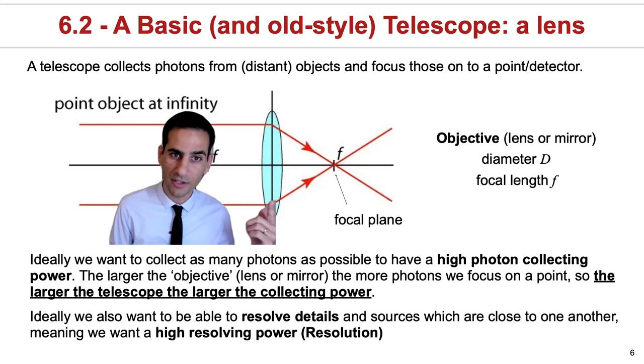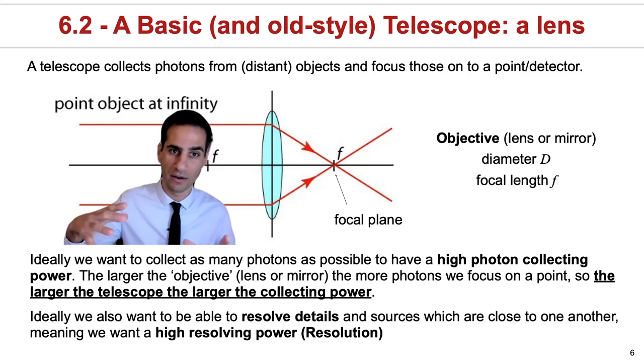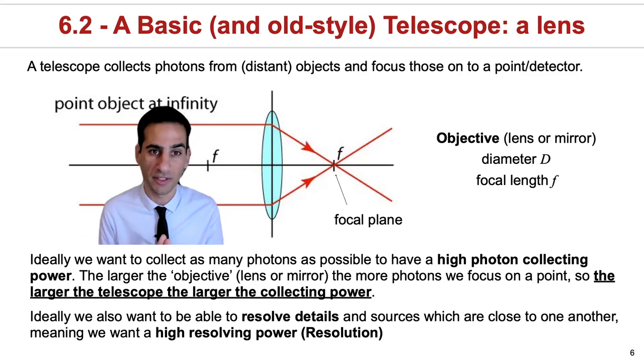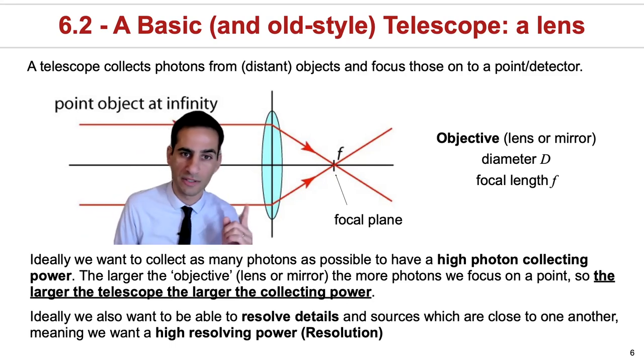So if you're looking at a refracting telescope, that's essentially the area of your lens. The larger the telescope, the larger the collecting power, but also this diameter will actually set the limit of your resolution.